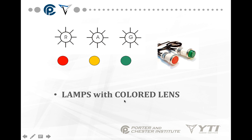Lamps and LED indicators are indicated by a little light bulb symbol — a little circle with rays coming out of it. They might have a letter inside to designate the color. It represents an LED with a colored lens.